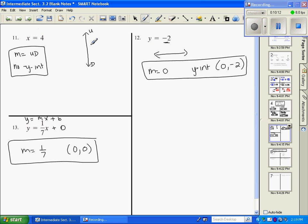X equals a number is a vertical line. Y equals a number is a horizontal line with a slope of 0.